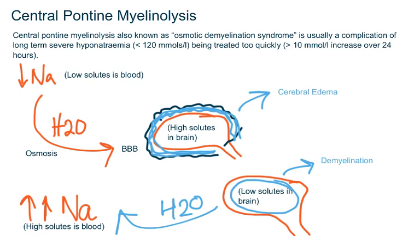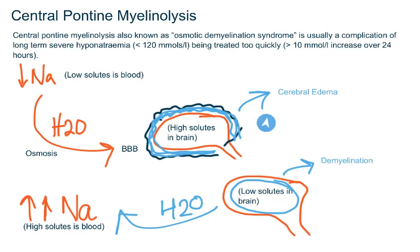As blood sodium levels fall, water moves from the area of low concentration of solutes, i.e. the blood, to the area of high concentration of solutes, i.e. the brain, through the blood-brain barrier. This process is called osmosis and causes the brain to swell. The brain adapts to this change by reducing the solutes in the brain cells so that water is balanced across the blood-brain barrier and the brain does not become edematous. This adaptation takes a few days. So if sodium is corrected rapidly in the blood, the water will move out of the brain cells quickly, causing compression of the fiber tracts and demyelination.